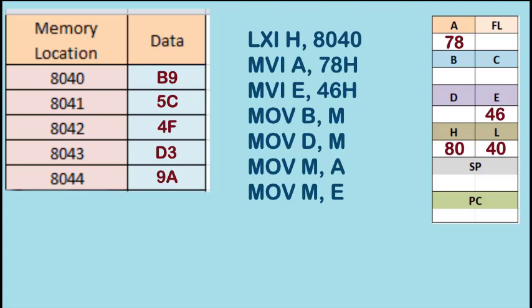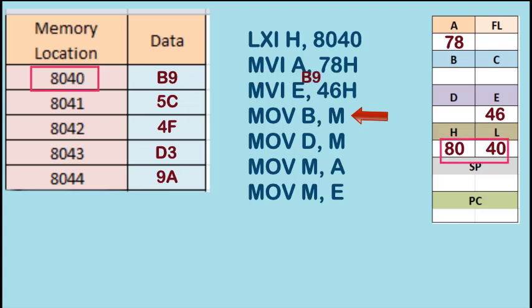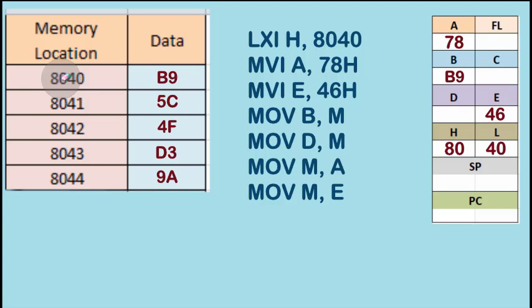Now with MOV B,M, the data from the memory location M will be stored in B. HL contains 8040 and this location 8040 contains B9, so the data B9 gets stored in register B. Then we see the instruction MOV D,M. Again in this case the data stored in memory location pointed by HL, which is B9, also gets stored in register D, as 8040 is still pointed.